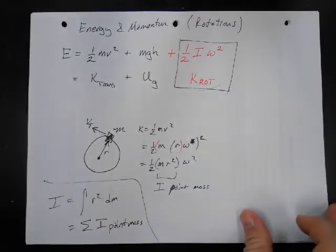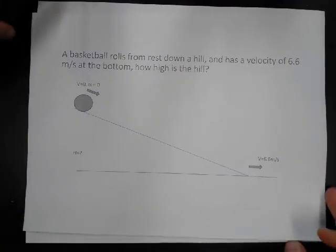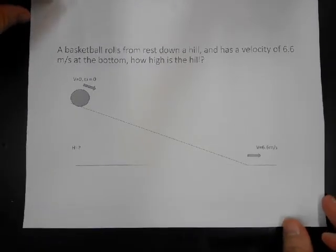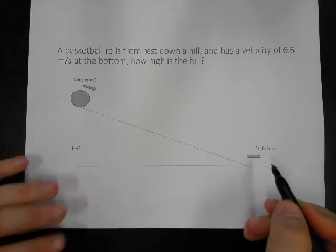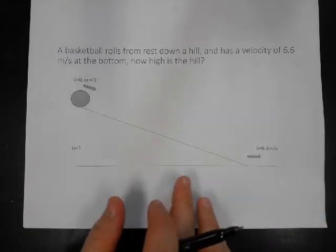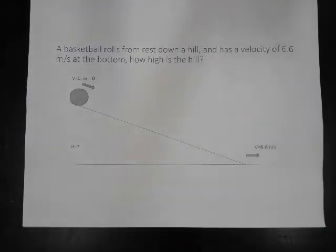Let's solve a problem. We have a basketball. It's going to roll down a hill. And this basketball has a velocity of 6.6 meters per second at the bottom of the hill. So, first off, we know this thing is rolling.